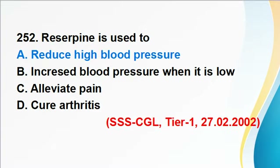Question 252: Reserpine is used to reduce high blood pressure. Answer A is correct. Reserpine is an alkaloid and antihypertensive drug used to control high blood pressure. It works by depleting the action of catecholamines, which are neurotransmitters in our body involved in heart rate regulation. That is why reserpine is an anti-catecholamine and antihypertensive drug.